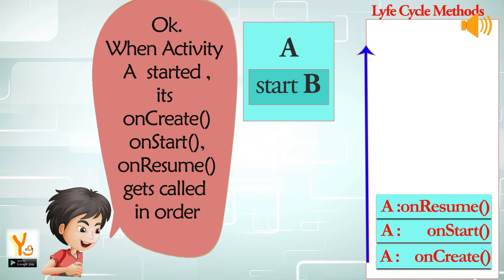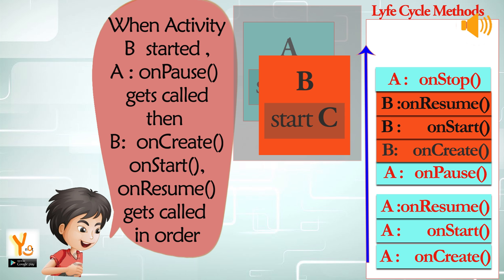Raj answered: When activity A is started, its onCreate, onStart, onResume get called in order. When activity B is started, A's onPause gets called first, then B's onCreate, onStart, onResume get called in order.